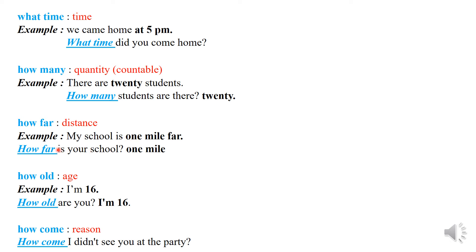'How old' is for age. Example: I'm 16. How old are you? I'm 16. That is like saying I'm 16 years old. 'How come' is for reason. Example: How come I didn't see you at the party?